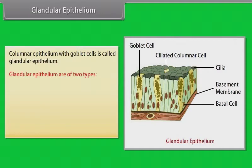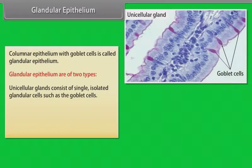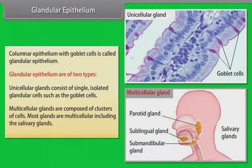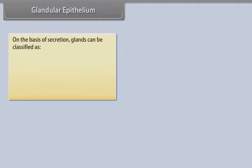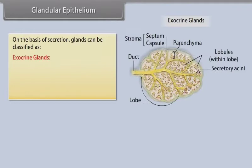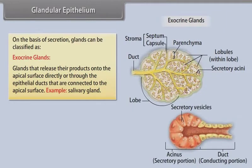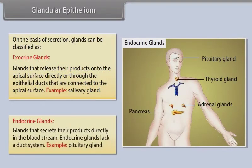Glandular epithelium. Columnar epithelium with goblet cells is called glandular epithelium. Glandular epithelium is of two types: unicellular glands consist of single isolated glandular cells such as goblet cells, and multicellular glands are composed of clusters of cells — most glands are multicellular, including the salivary glands. On the basis of secretion, glands can be classified as exocrine glands, which release their products onto the apical surface directly or through epithelial ducts — example, salivary gland — and endocrine glands, which secrete their products directly into the bloodstream and lack a duct system — example, pituitary gland.